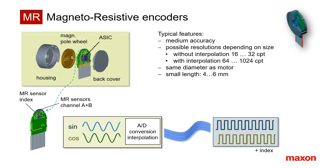The low-resolution version creates one encoder pulse per magnetic pole, simply by rectifying the sine and cosine signal. The high-resolution versions use an ASIC for signal interpolation and as a line driver. Due to the interpolation and other tolerances, the MR encoder has a lower accuracy than the optical encoder.